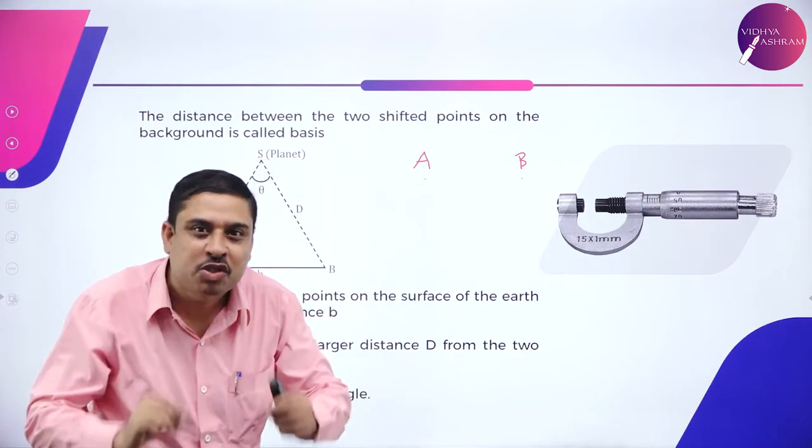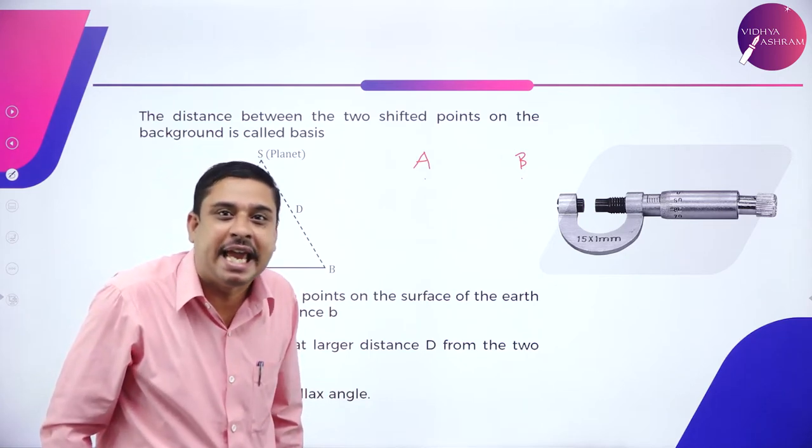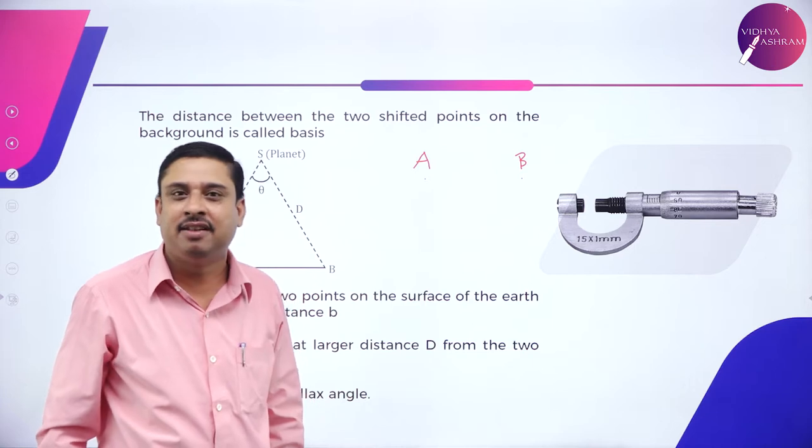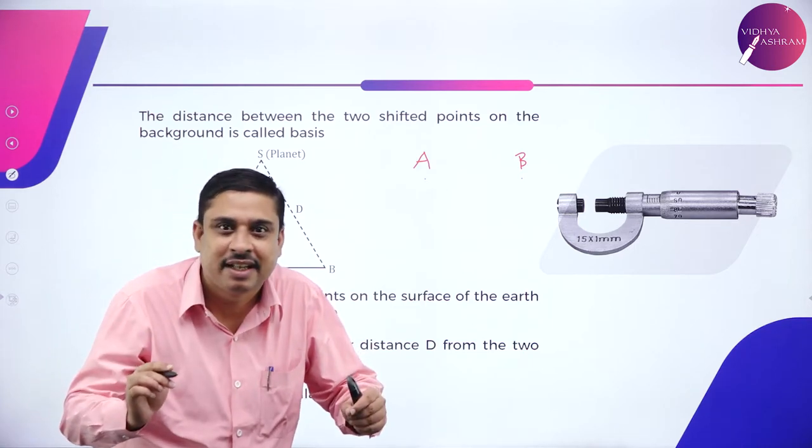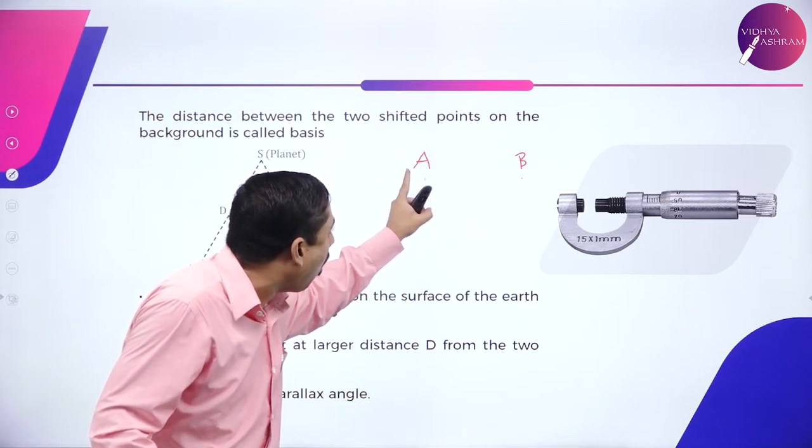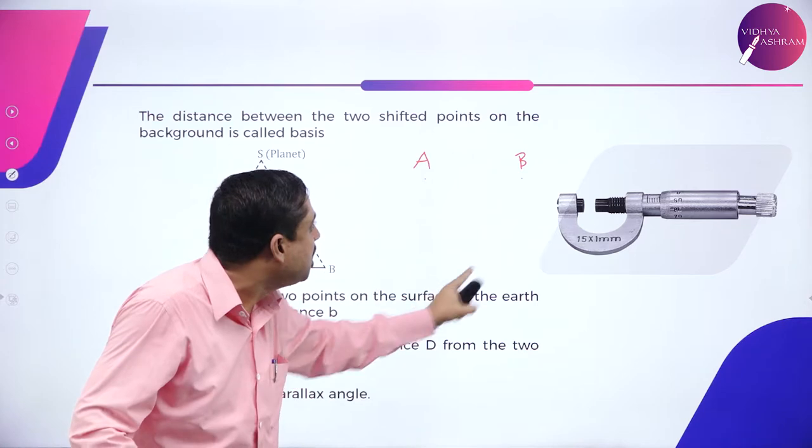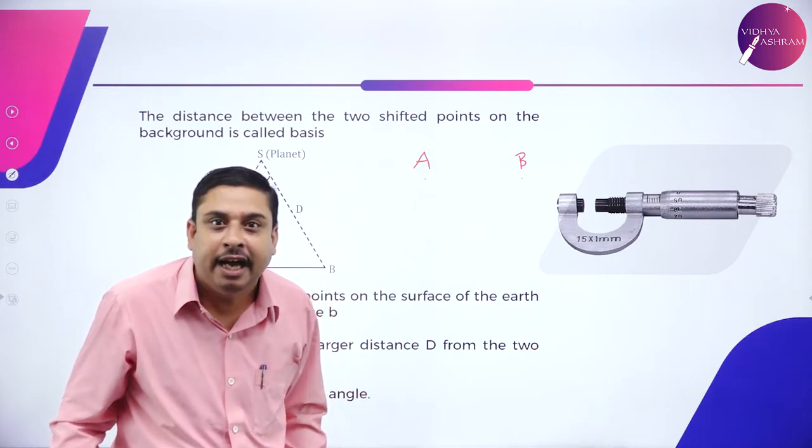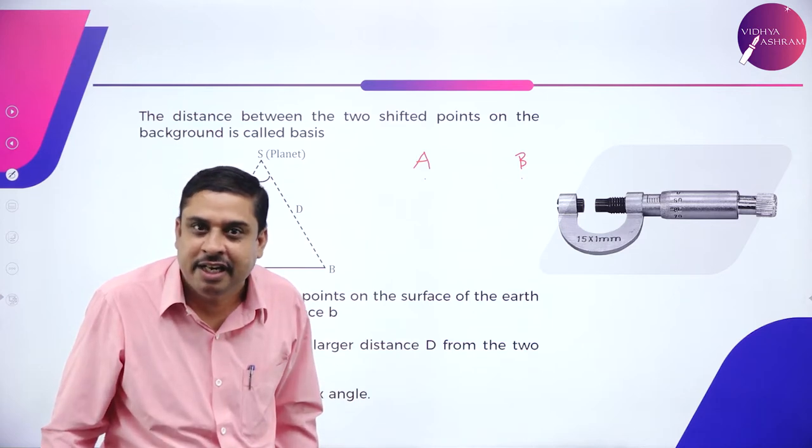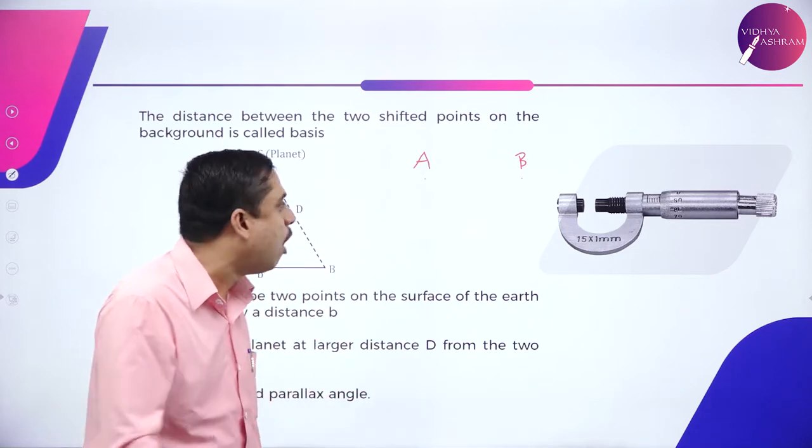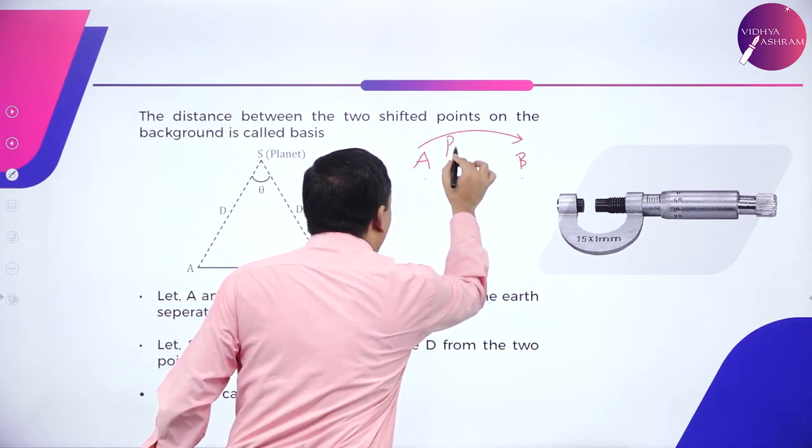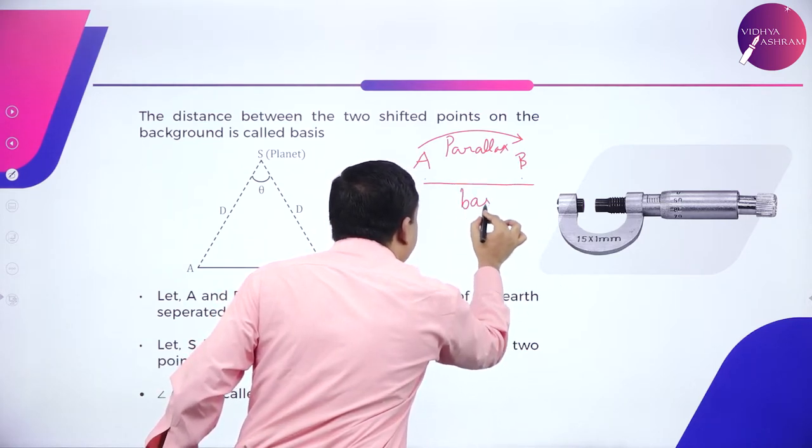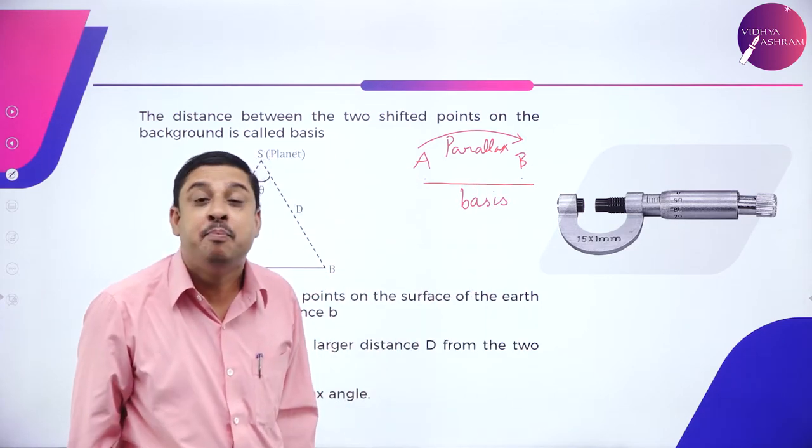It is actually at the position A. But when you have closed your eyes, you come to believe that it is shifted to the position B. So, there is a shift in the position of an object with respect to a given background.